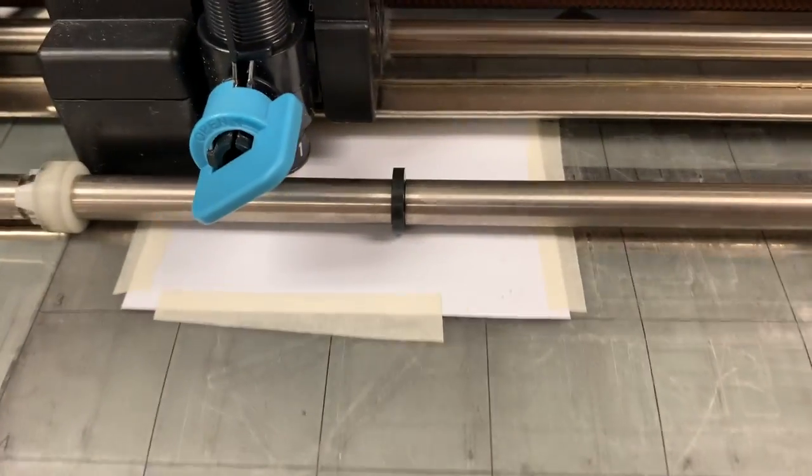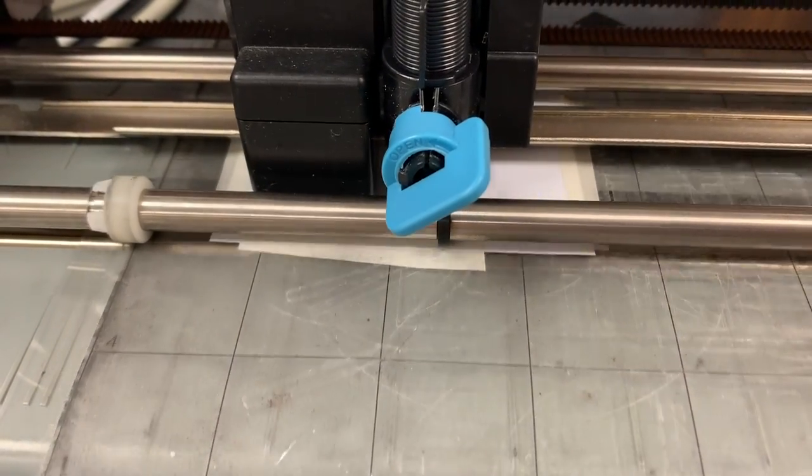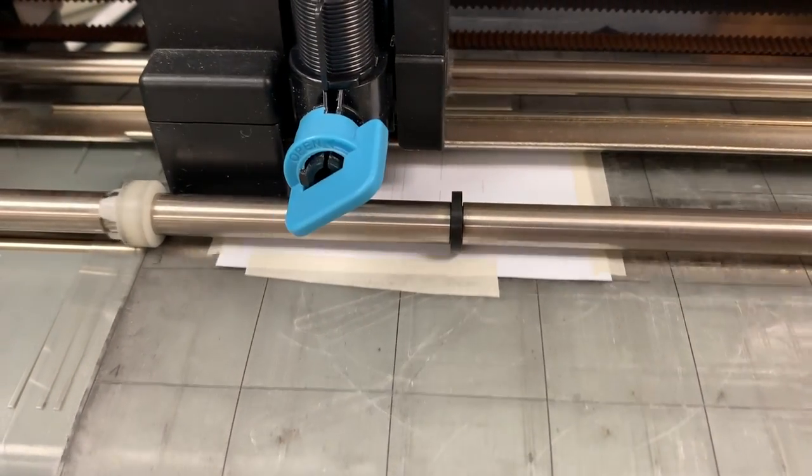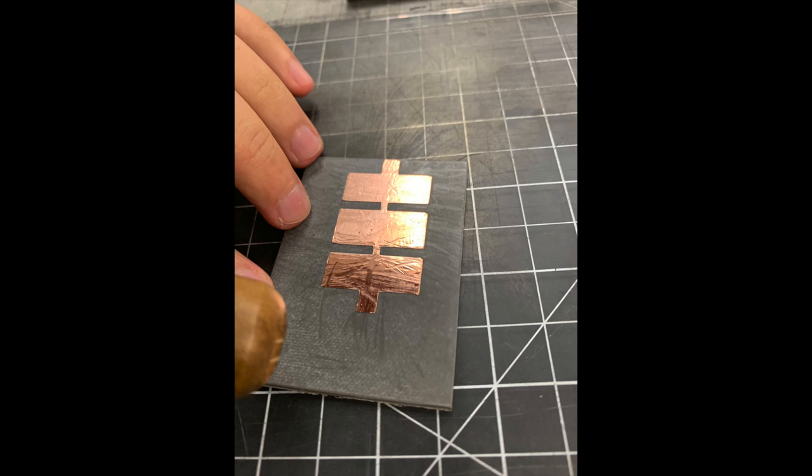This is what it looks like when you turn it over. Next, we carefully lined up the mat with the Silhouette cutter and then press print. Then we carefully peel away excess copper and place it on Duroid 5880.